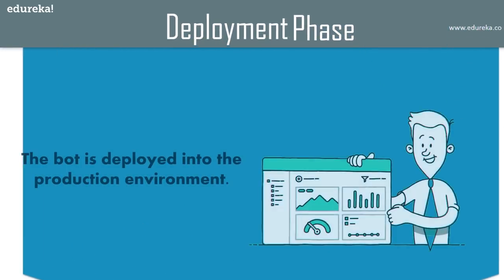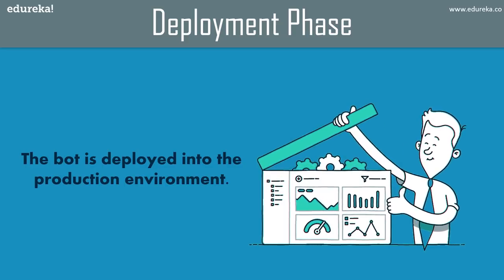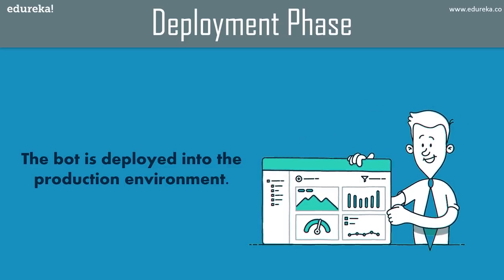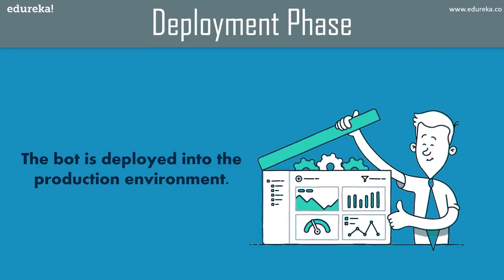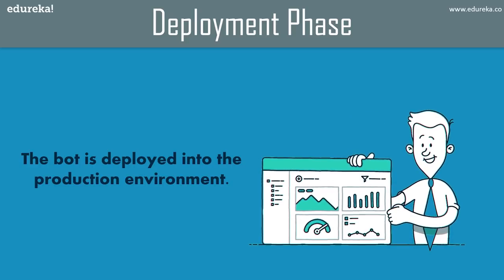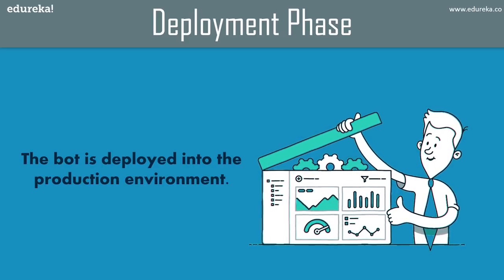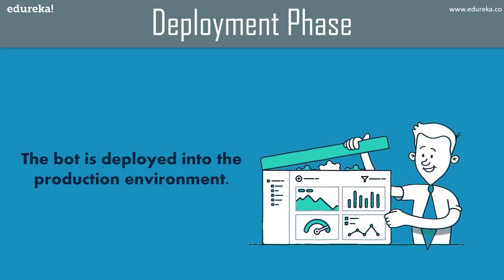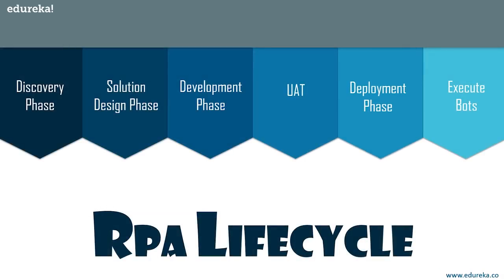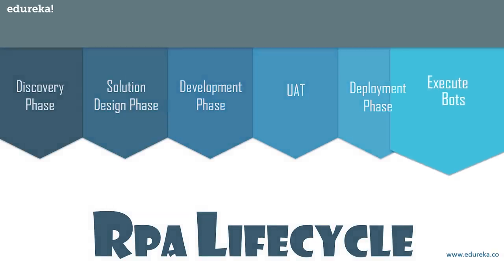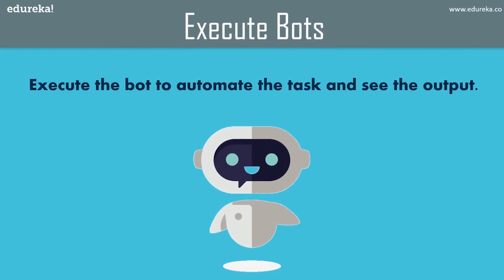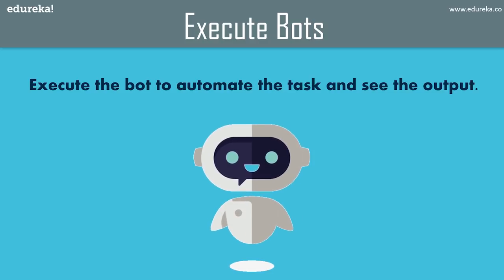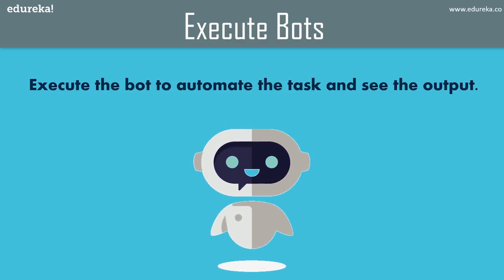Now let's move to the deployment phase. The deployment phase is where the bot is deployed into the production environment. Once the bot is developed, tested in the pre-production environment, and passes the test, it moves to the deployment phase. The bot is deployed into the production environment so users can use it. Once deployed, the final additional phase is executing the bot — users can run or execute the bots to generate meaningful results.